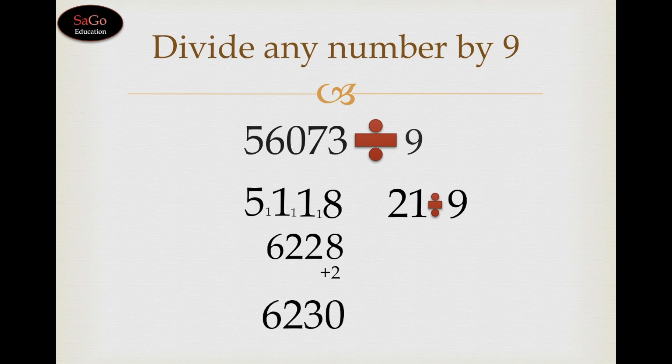And it will come 6, 2, 3, 0. 6, 2, 3, 0 is our actual quotient, and 21 divided by 9 gives us remainder as a 3. 6, 2, 3, 0 is our actual quotient and 3 is our actual remainder.